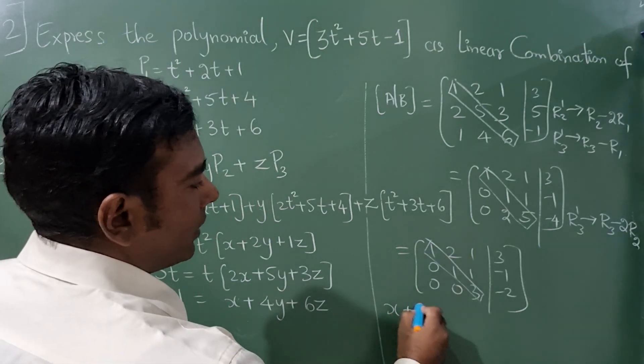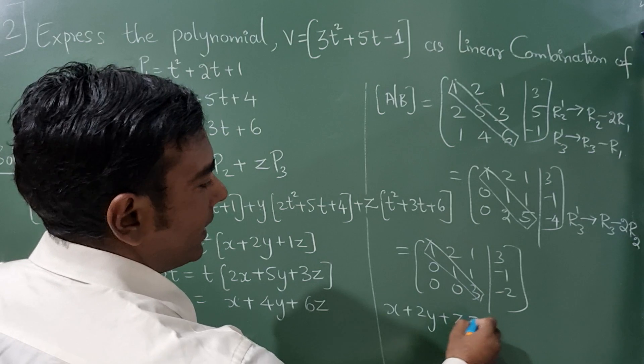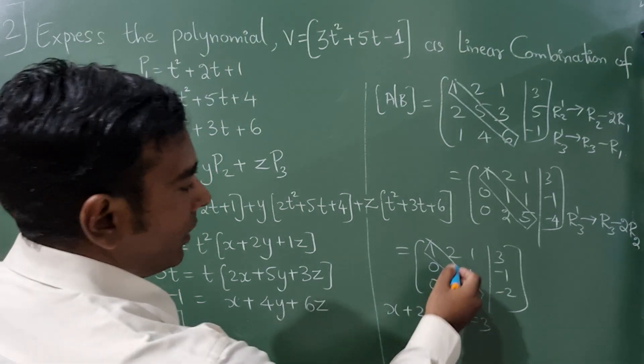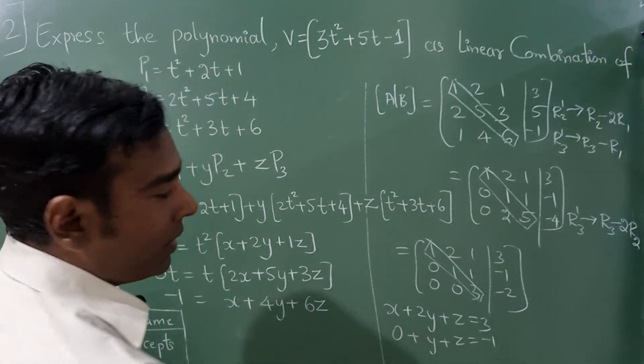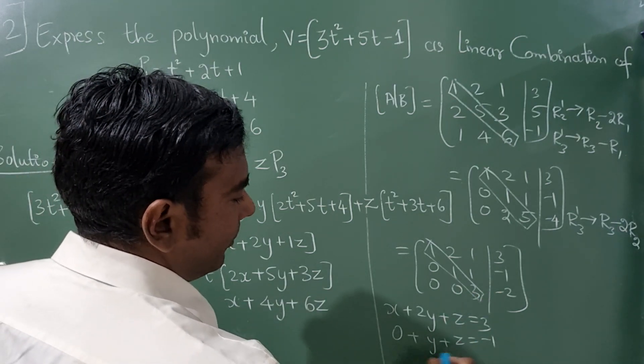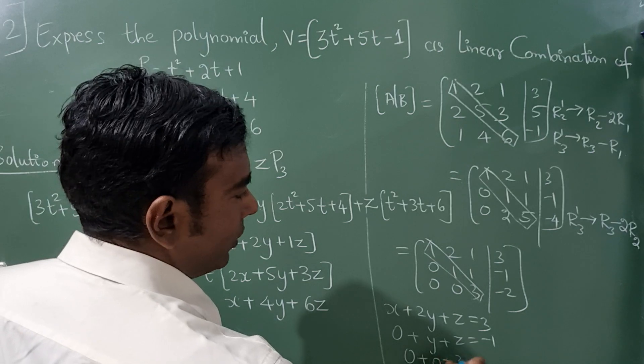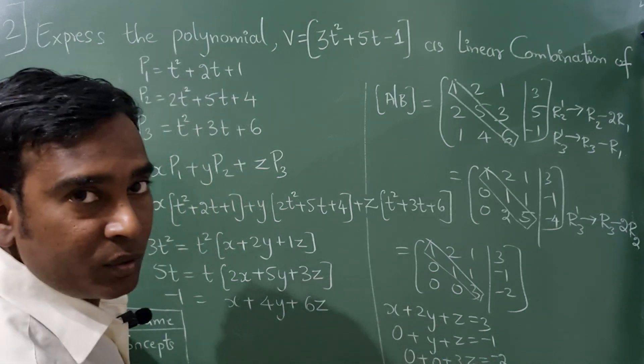Here this will become x + 2y + z = 3. This will be y + z = -1, and the last one will become 0 plus 0, 3z = -2.